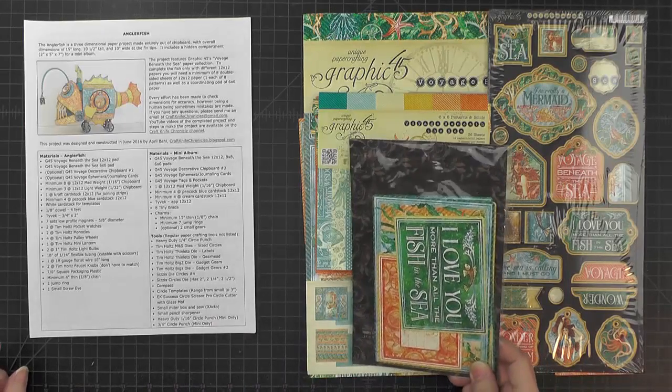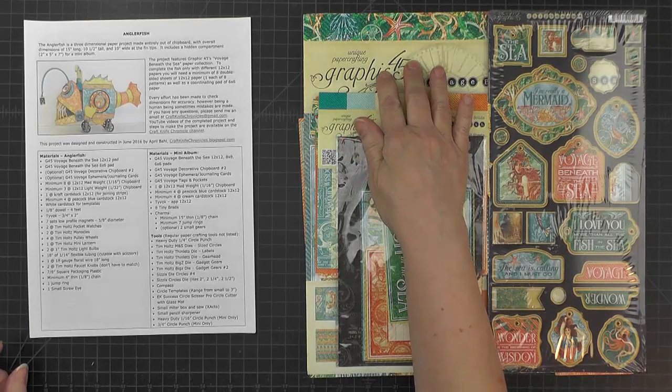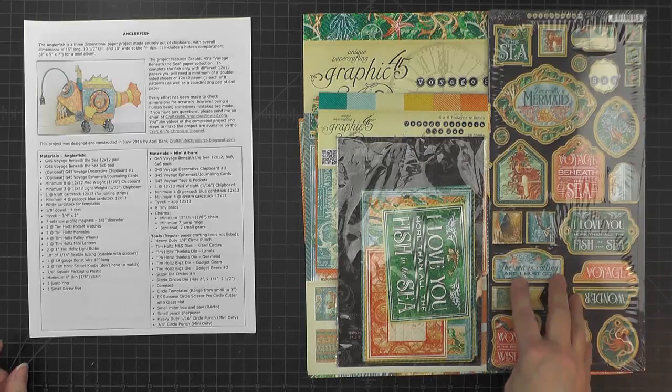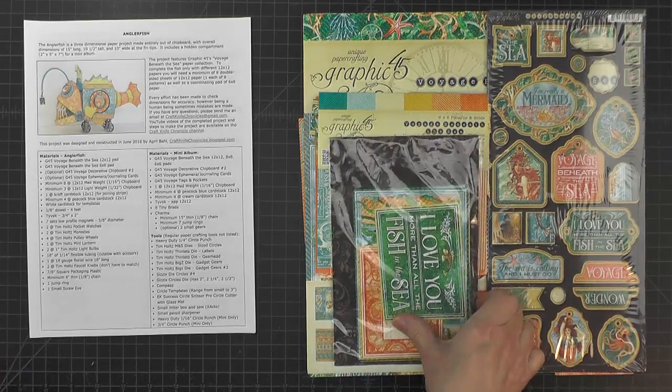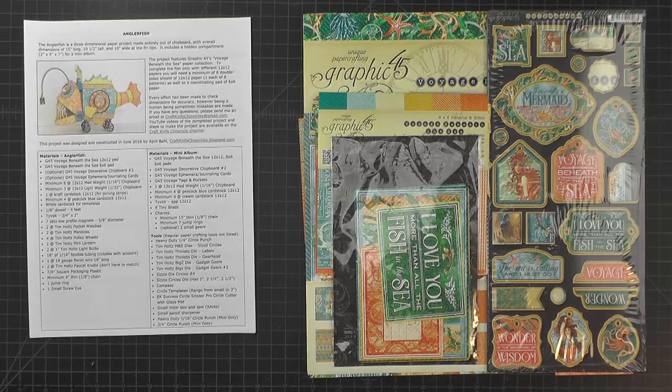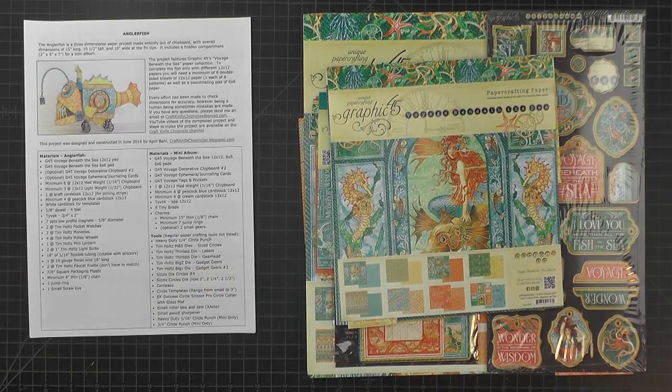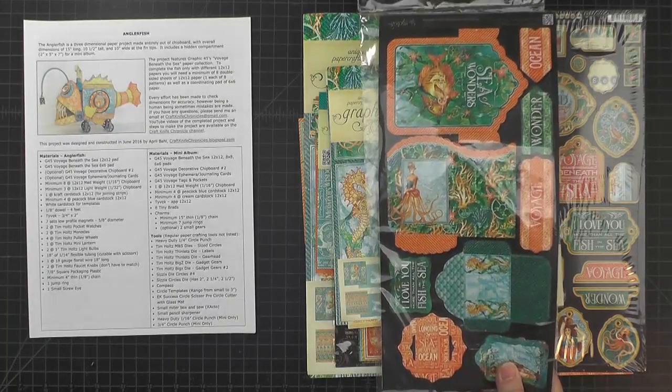For the mini album I used leftover scraps from the 12 by 12 and 6 by 6. I used a bunch of pieces from the chipboard and from the ephemera and journaling cards set.